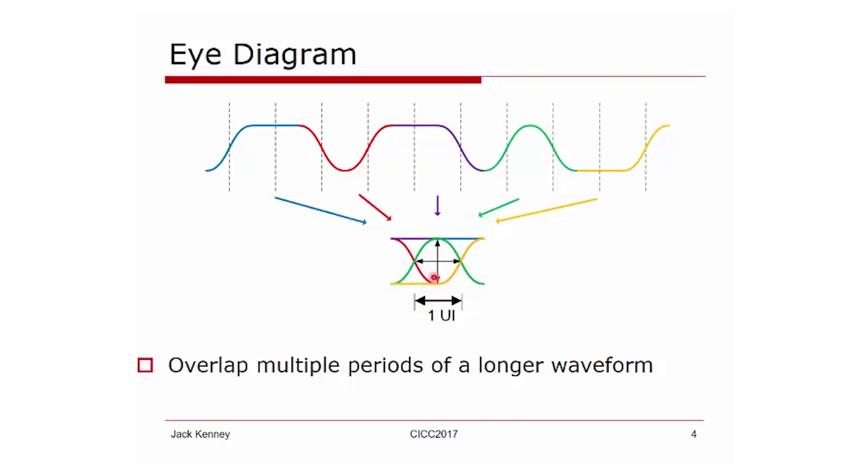You also have your vertical eye opening, the peak-to-peak voltage in the center of the eye. You have your horizontal eye opening which is measured in UI or picoseconds. The point at which you sample is where these come together in this cross here. That's your sampling in both voltage and time.